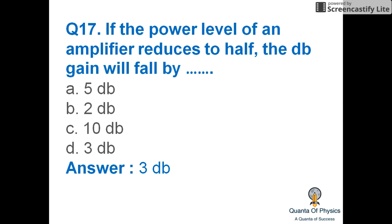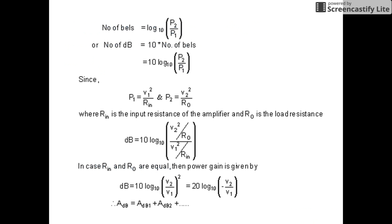If the power level of an amplifier reduces to half, the decibel gain will fall by 3 decibels. The number of bels is equal to log₁₀(P₂/P₁), where P₂ is the output power and P₁ is the input power. The number of decibels is equal to 10 times the number of bels.